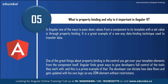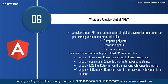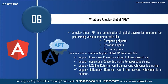What is property binding and why is it important in Angular 11? Property binding is one of the ways to pass down values from a component to its template with a set value. It is a one-way data binding technique used to transfer data. Property binding gives you control over your template elements from the component itself, allowing the developer to dictate how data flows and gets updated with their own logic on any DOM element without restrictions.